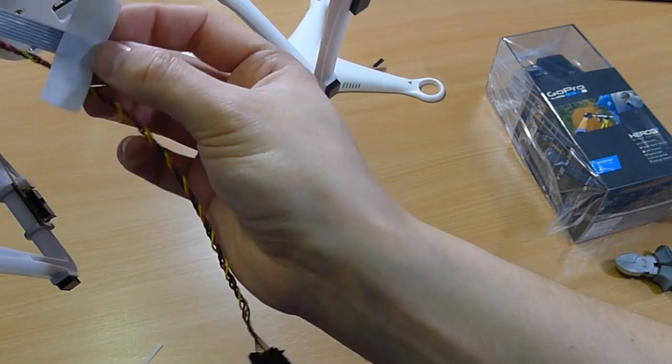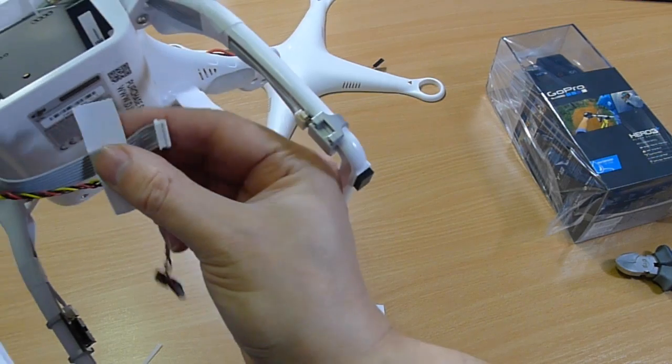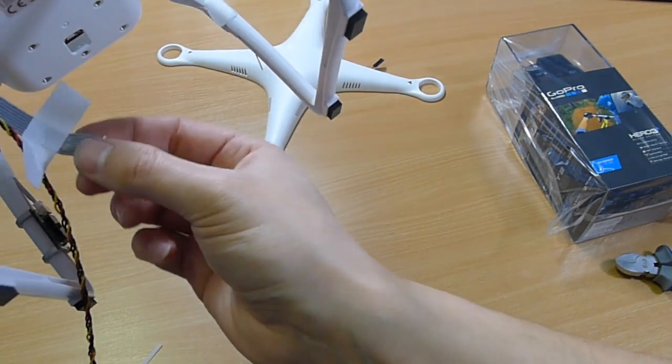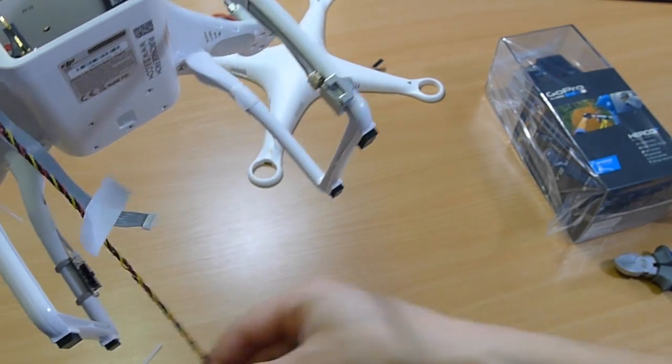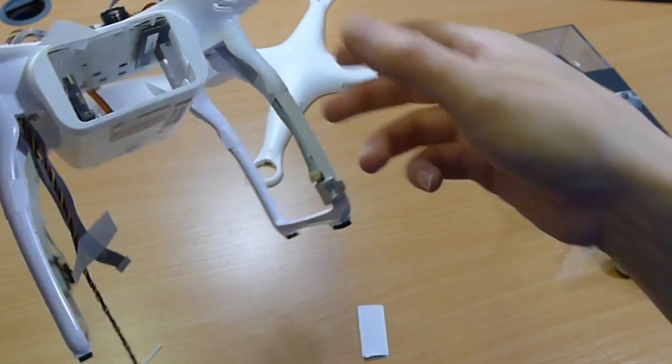And then the Zenmuse will be connected to this. And the video signal will come out of the GoPro into the Zenmuse, up that cable, and then back down and out of this cable. Super easy.